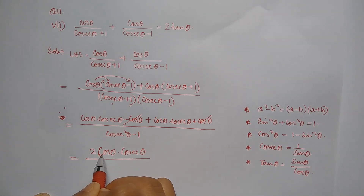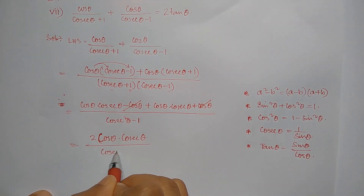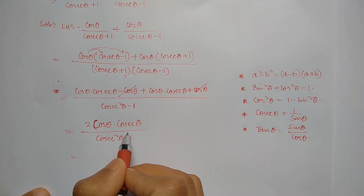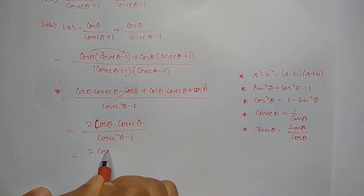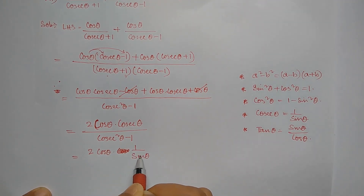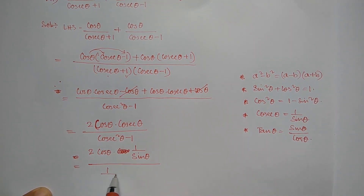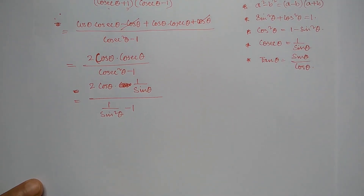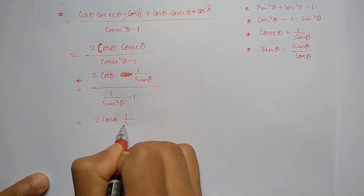We went to the bracket. Cosec squared theta minus 1. Now, the formula for cosec theta equals 1 by sine theta. So cosec squared theta equals 1 by sine squared theta. Now we have 2 cosec squared theta formula: 1 by sine squared theta minus 1. Now we have 2 cos theta into 1 by sine theta.